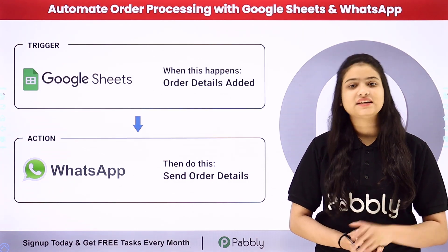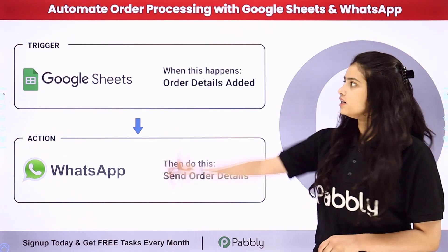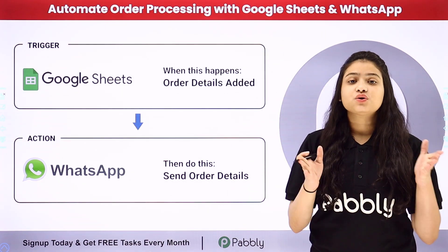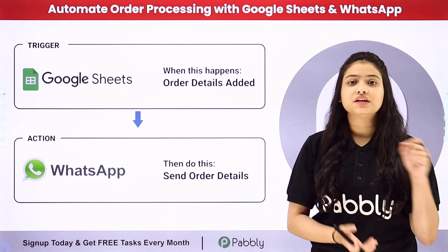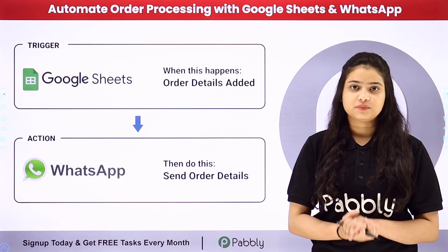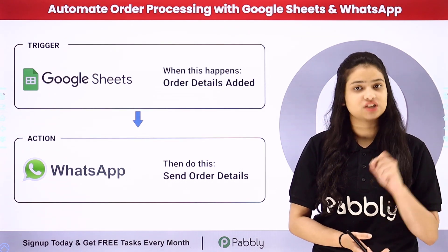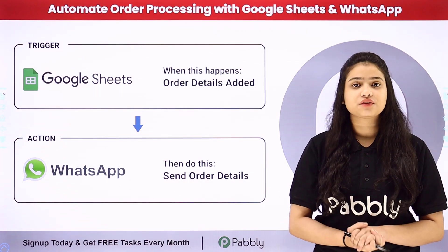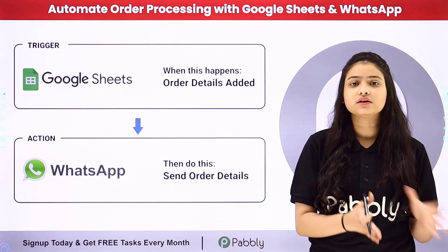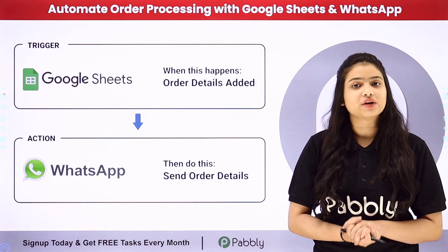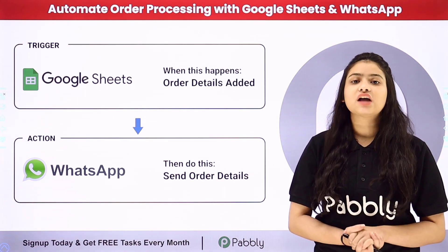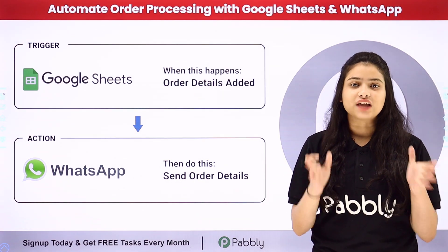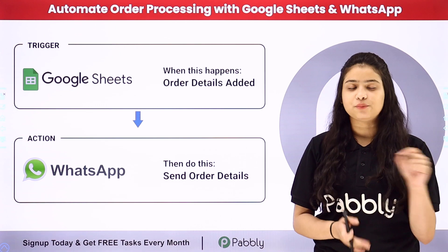Hello everyone, welcome back to Pabbly Connect. In this video we are going to learn how to automate order processing with Google Sheets and WhatsApp. I have a cosmetic store and I am managing all my orders and customers with the help of Google Sheets. Now I have the details of all the orders in my Google Sheets and my objective is to send WhatsApp messages to all the customers for order details. We are going to automate this entire process without any coding or programming skills with the help of Pabbly Connect.